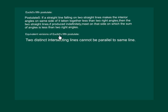An equivalent version of Euclid's fifth postulate is that two distinct intersecting lines cannot be parallel to the same line.